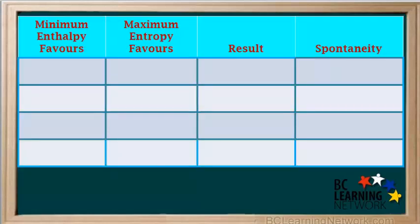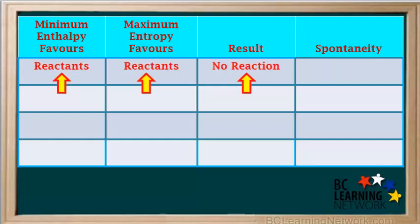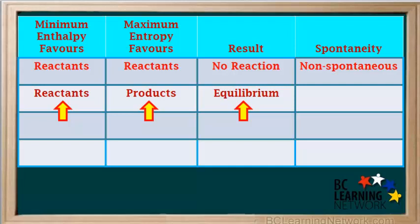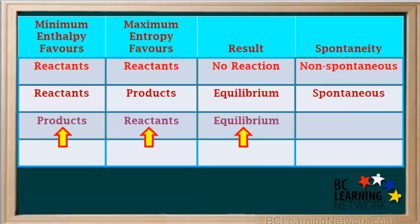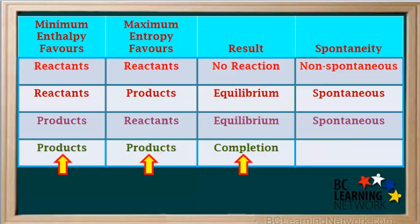We can summarize these statements in a simple table. If both minimum enthalpy and maximum entropy favor the reactants, there is no reaction, and since nothing happens when the reactants are mixed, this reaction is said to be non-spontaneous. When minimum enthalpy favors reactants and maximum entropy favors products, the reactants will react and reach a state of equilibrium — since a reaction does occur at least to a certain extent, this reaction is spontaneous. When minimum enthalpy favors products and maximum entropy favors reactants, the reactants will again react and reach a state of equilibrium, and since a reaction does occur, this reaction is spontaneous. When both minimum enthalpy and maximum entropy favor the products, the reactants will keep reacting until all reactants have been converted to products — the reaction goes to completion, and is certainly spontaneous.